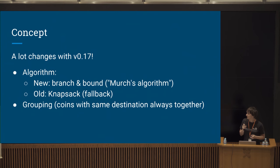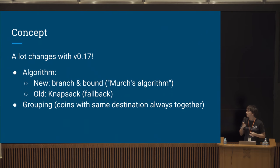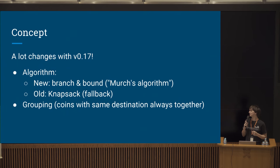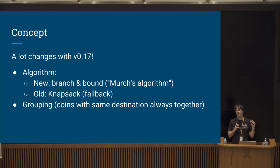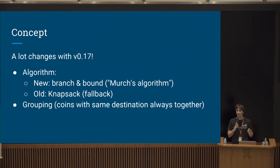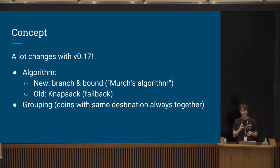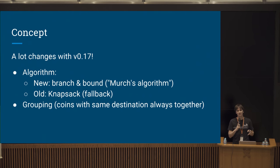There's a new algorithm called Branch and Bound, also known as Merch's algorithm after its creator. There's also the old algorithm called Knapsack Solver, which is still used as a fallback right now but will probably be removed in a future version.